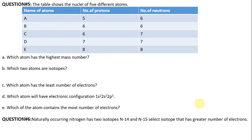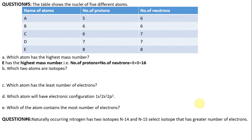A table shows the nuclei of 5 different atoms: A, B, C, D, E. Number of protons: 5, 6, 6, 7, 8. Number of neutrons: 6, 6, 7, 7, 8. Which atom has the highest mass number? Atom E has the highest mass number: number of protons plus number of neutrons equals 8 plus 8 equals 16.